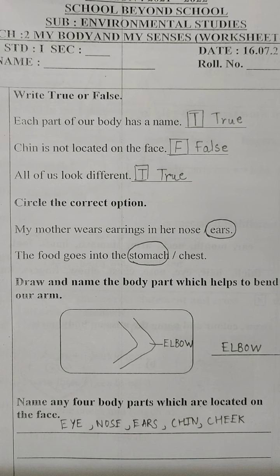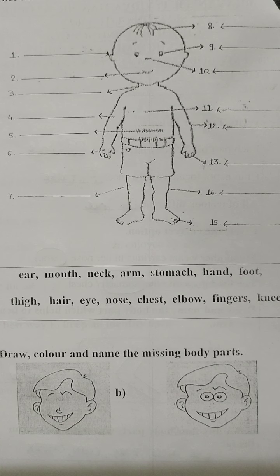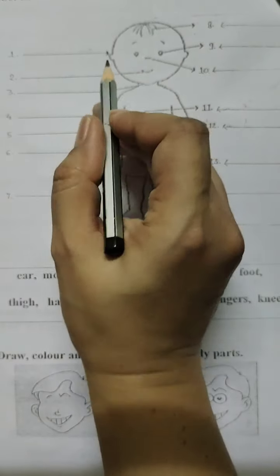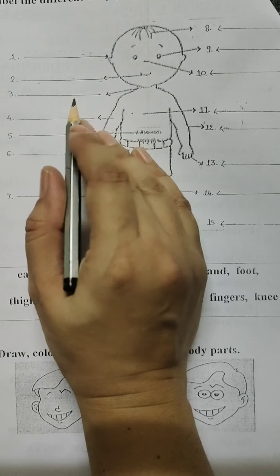Now students, turn around the page. Now here students, the picture of this boy is given and we have to label the different body parts. So we will start from the left hand side.